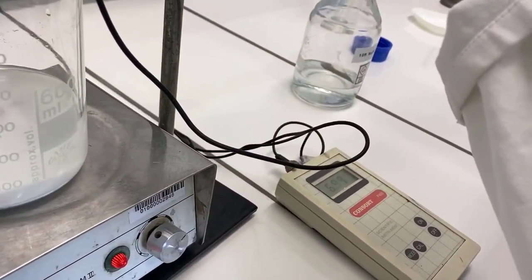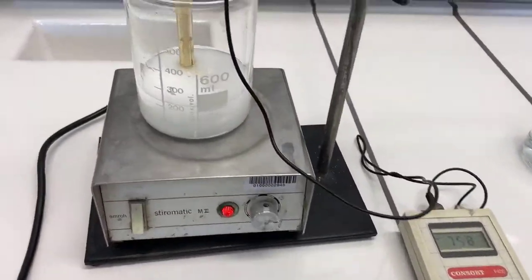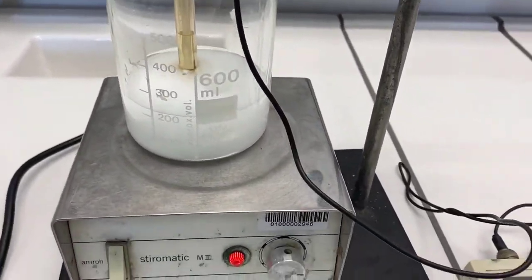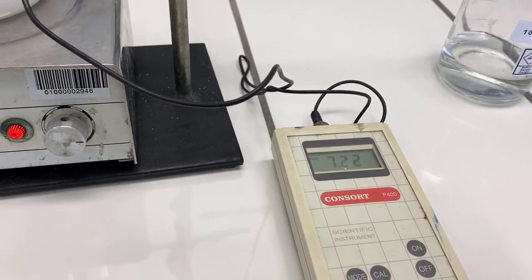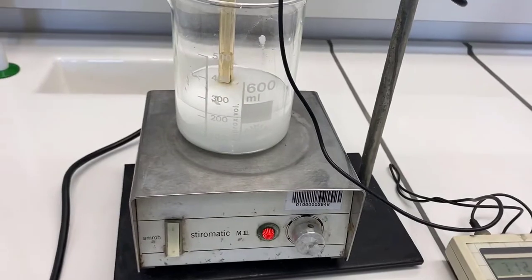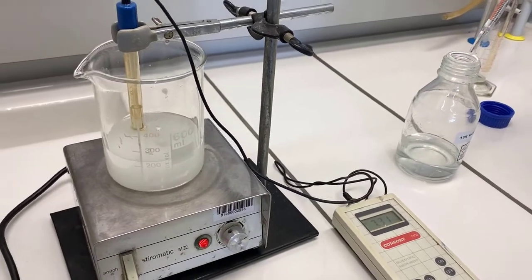You will see that the pH will increase immediately. EDTA will start dissolving in water from around pH 7, and as it starts dissolving, the pH of the solution will drop again, but it will get stabilized at a certain point. When the pH does not drop further, add more sodium hydroxide.